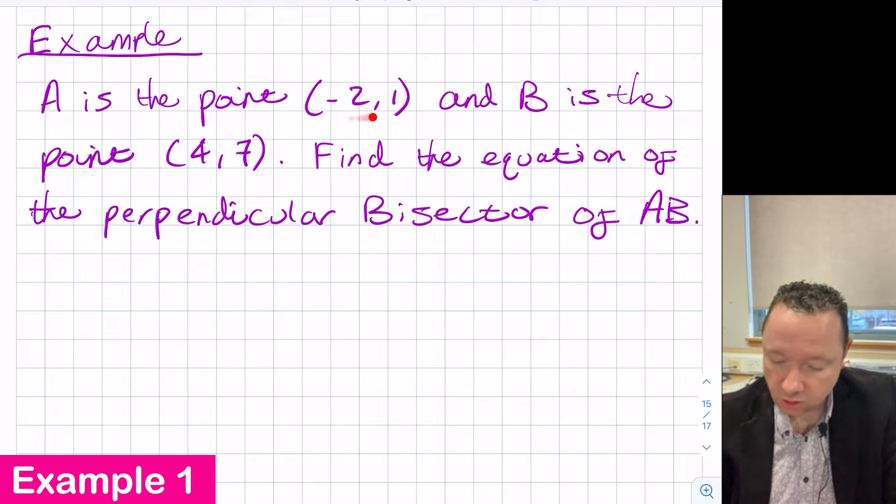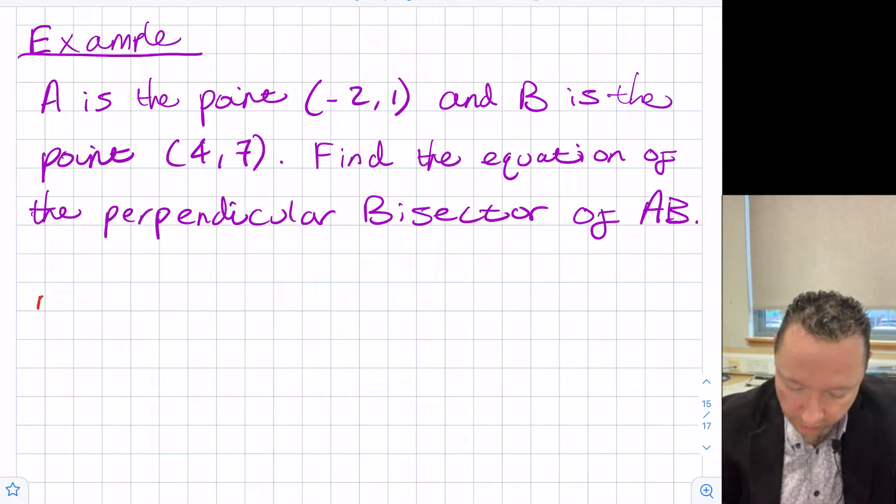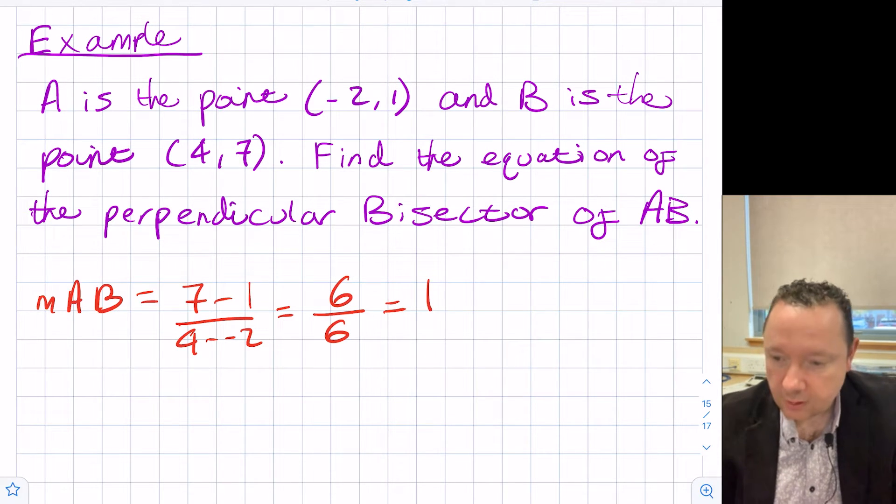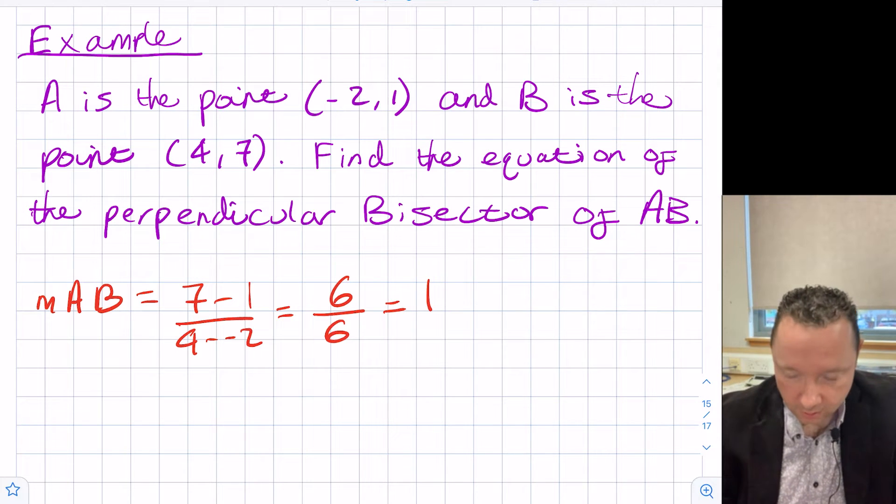A is the point minus two, one. B is the point four, seven. Find the equation of the perpendicular bisector of AB. So step one, we're going to have to find the gradient of AB. The gradient of AB is seven minus one over four minus minus two. That's six over six which is one. Since we know that that is one, we can automatically know the gradient of the perpendicular. Therefore the gradient of our perpendicular line is going to be minus one.